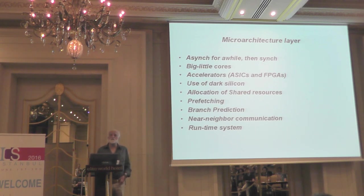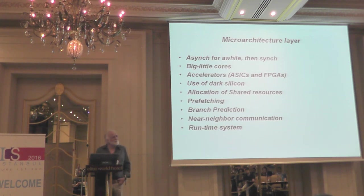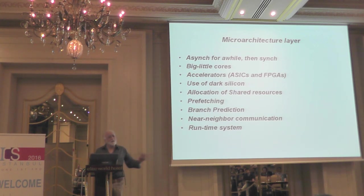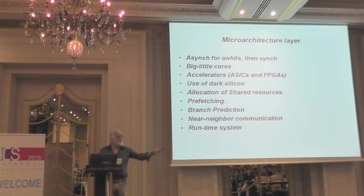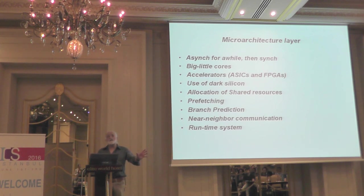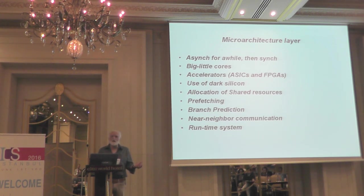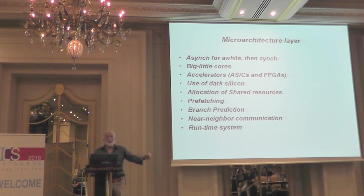Big cores and little cores — what we called asymmetric chip multiprocessors for 15 years, now called heterogeneous cores — give you heavy-weight and light-weight cores. The microarchitecture can help with latency by knowing when to use each. Amdahl's law: during the parallel portion everything runs great, but when you hit the Amdahl bottleneck you don't want a lightweight core — hand it off to the big core to get past that bottleneck quicker.